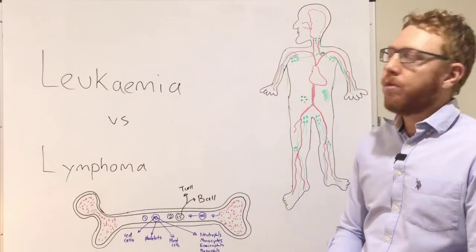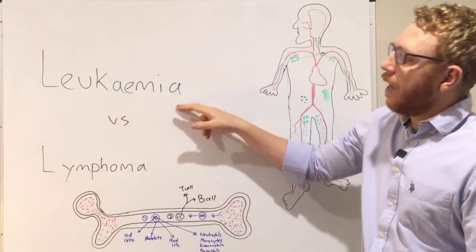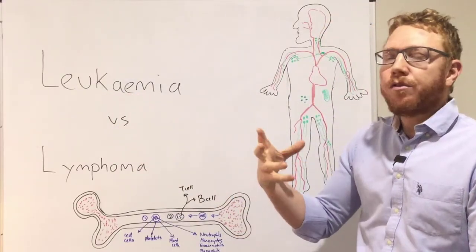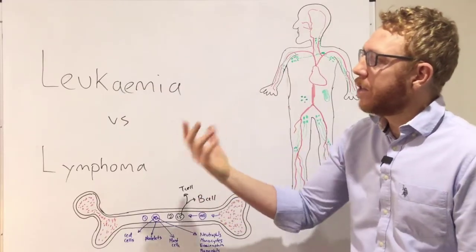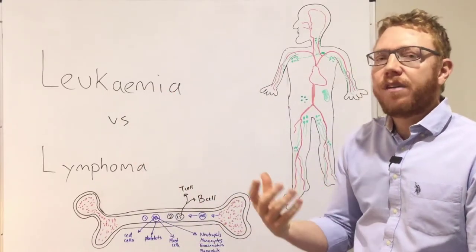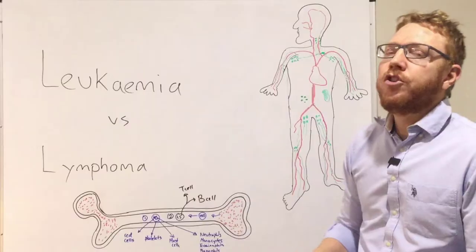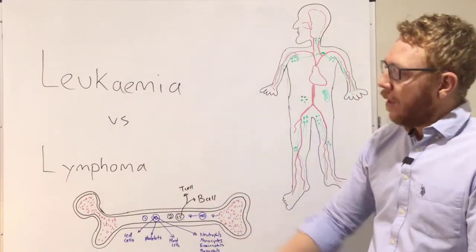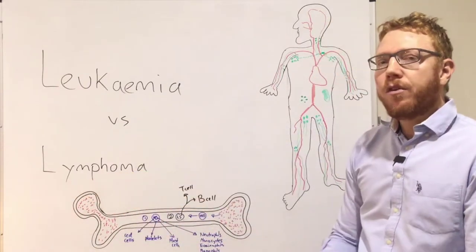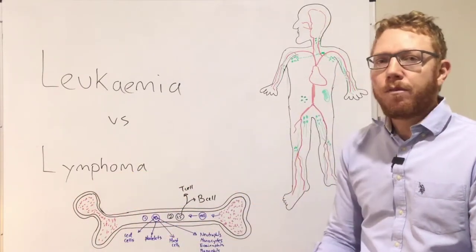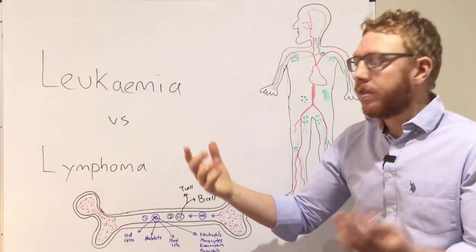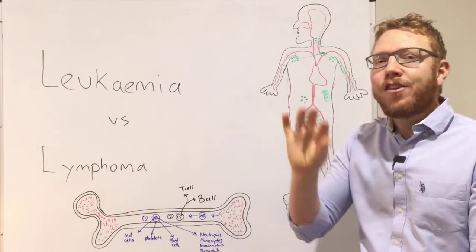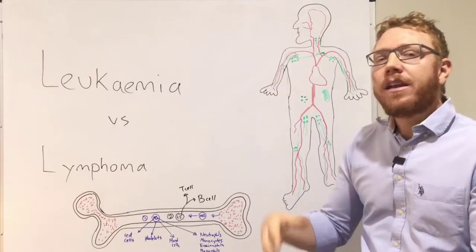Let's get an understanding of what these terms mean, starting with leukemias. 'Leuk' refers to white — usually referring to white cells or leukocytes — whereas 'emia' usually means dysfunction in blood. So a leukemia generally means a white blood cell cancer predominantly focused within the blood. Whereas with lymphomas, 'lympho' can refer to both lymphocyte — a specific type of white blood cell — or lymph nodes, and 'oma' means cancer. So lymphoma means cancer of lymphocytes generally found in lymph nodes.